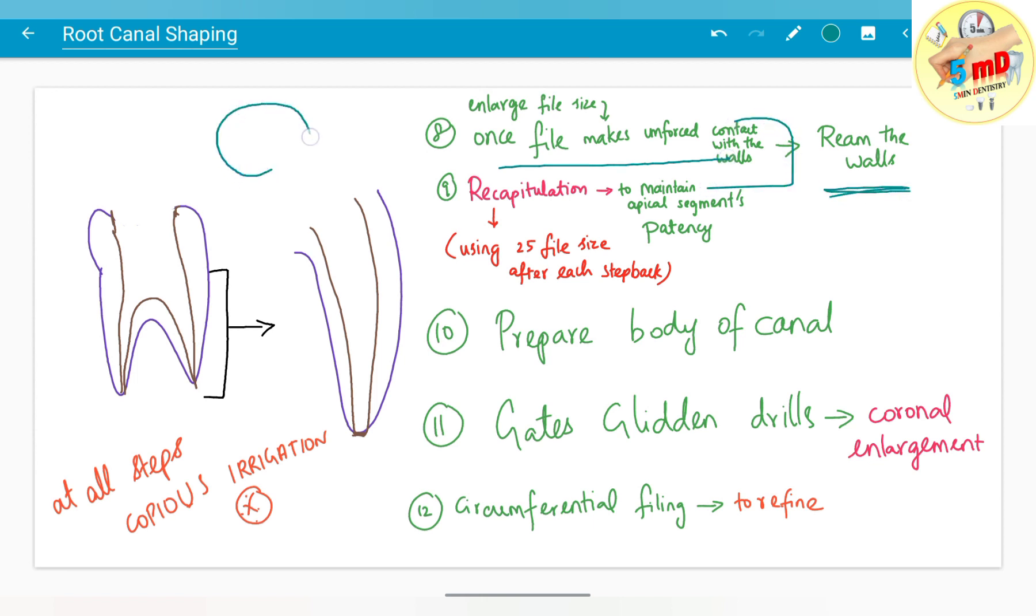Recapitulation is done where after using a bigger file, you use a smaller file to maintain patency, remove debris, and prevent pushing debris beyond the peri-apex. After working with 35mm, use 25mm to maintain apical patency and prevent debris extrusion.